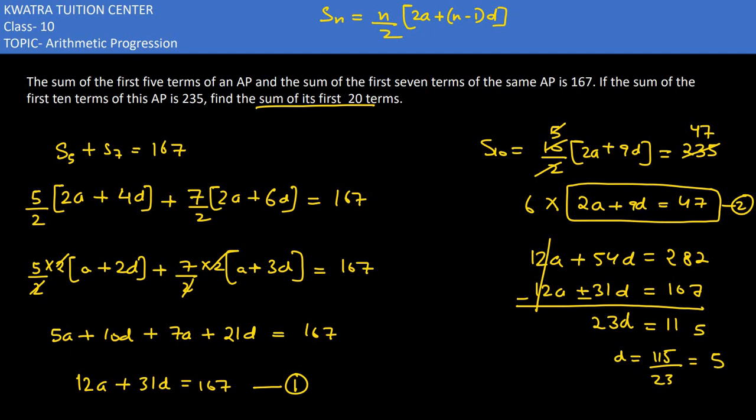Now find a by substituting in either equation. When you substitute, a will come out to be 1. So a is 1 and d is 5. Now we have to find out S20. S20 equals 20 by 2, bracket 2 into a, which is 2 into 1, that is 2, plus 19d, which is 95. So 10 times 97 equals 970. That would be the sum of first 20 terms.